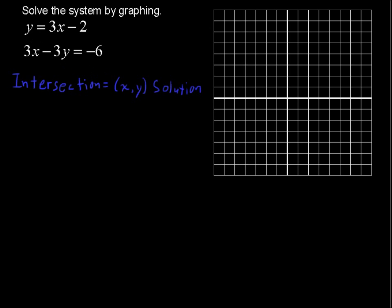Alright, so let's graph that first one: y equals 3x minus 2. We have a y-intercept of negative 2 and a slope of 3. So up 3 to the right 1, up 3 to the right 1, and you can just keep on with that pattern to graph that equation. I'll draw this as straight as I can, and put some arrows on either side to show that the line goes on forever.